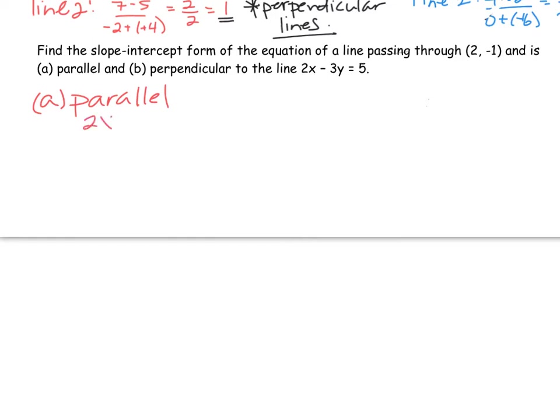If we have 2x minus 3y equals 5, that's in general form. You could solve for y and put it in slope-intercept form to determine the original slope. Or if you remember from day 1, our formula for slope in general form is negative a over b. In this case, that would be negative 2 over negative 3, and that would make that positive 2 thirds. That's the slope for our original line. If we want a parallel slope, we would keep that fraction the exact same. That's our m value.